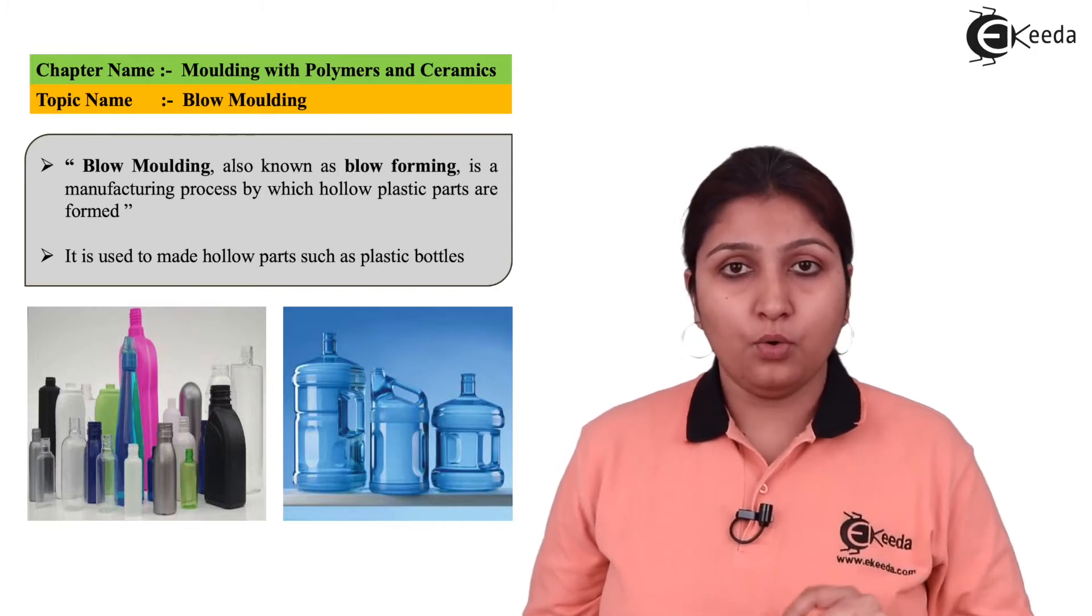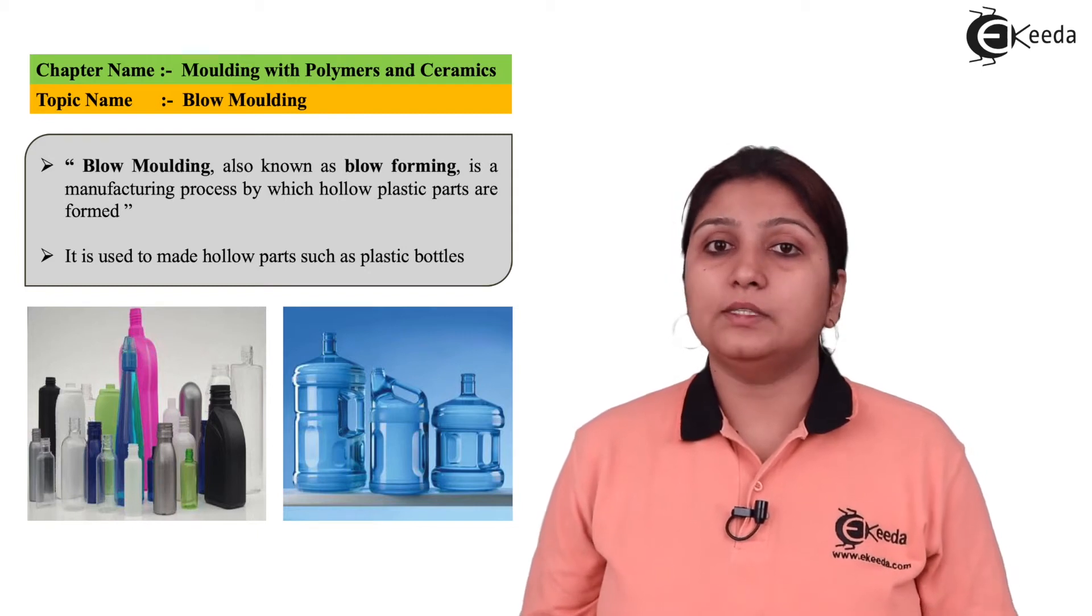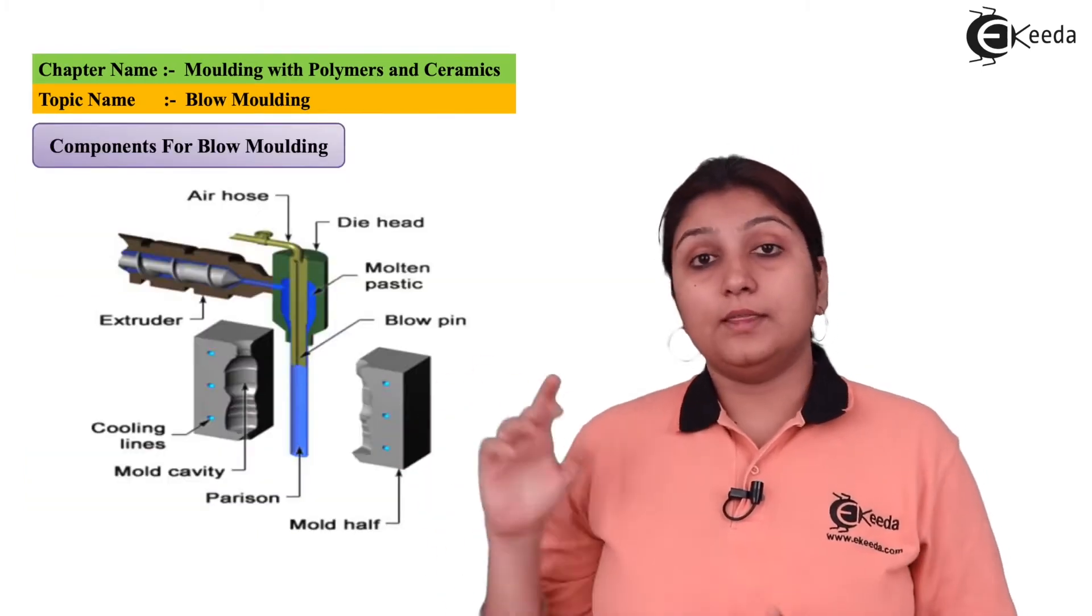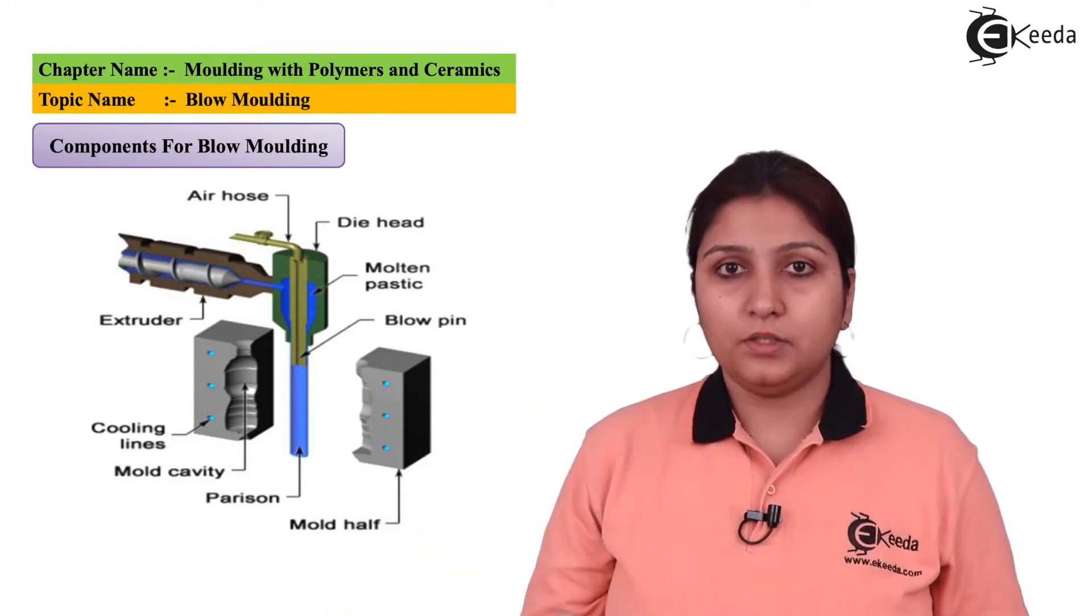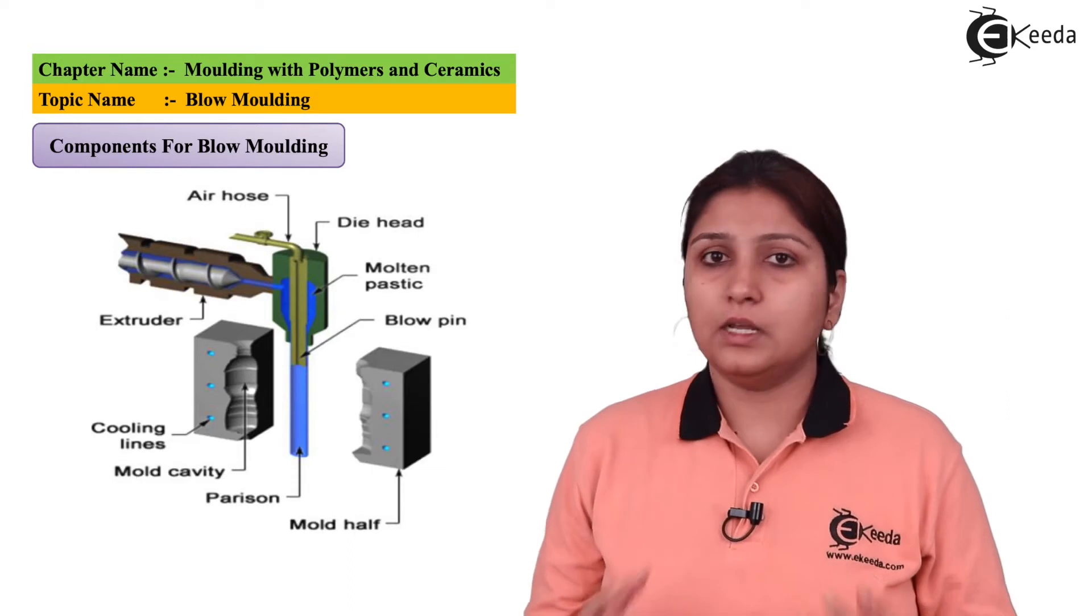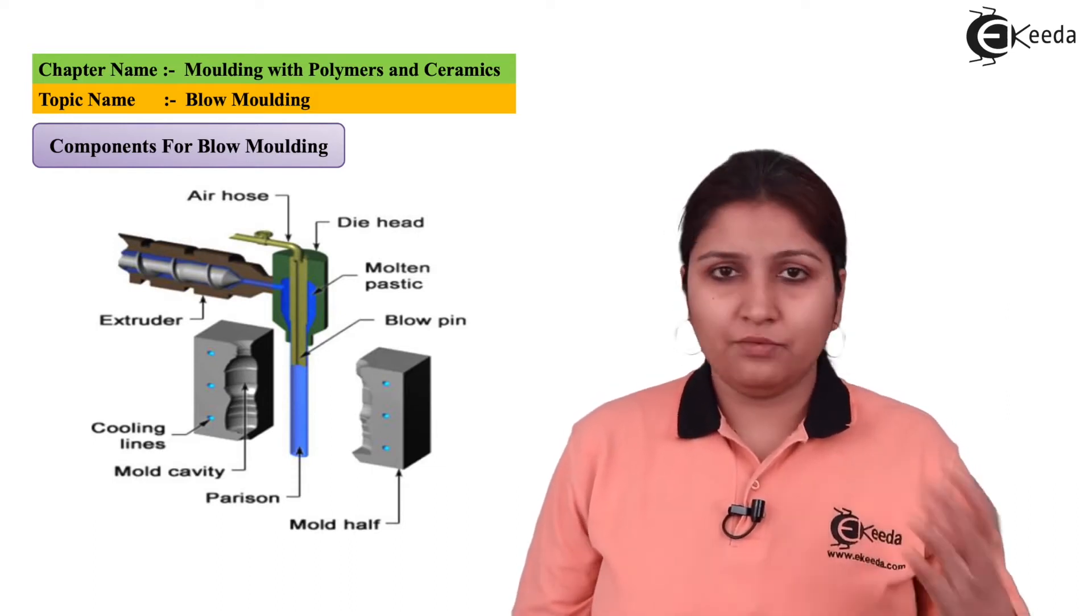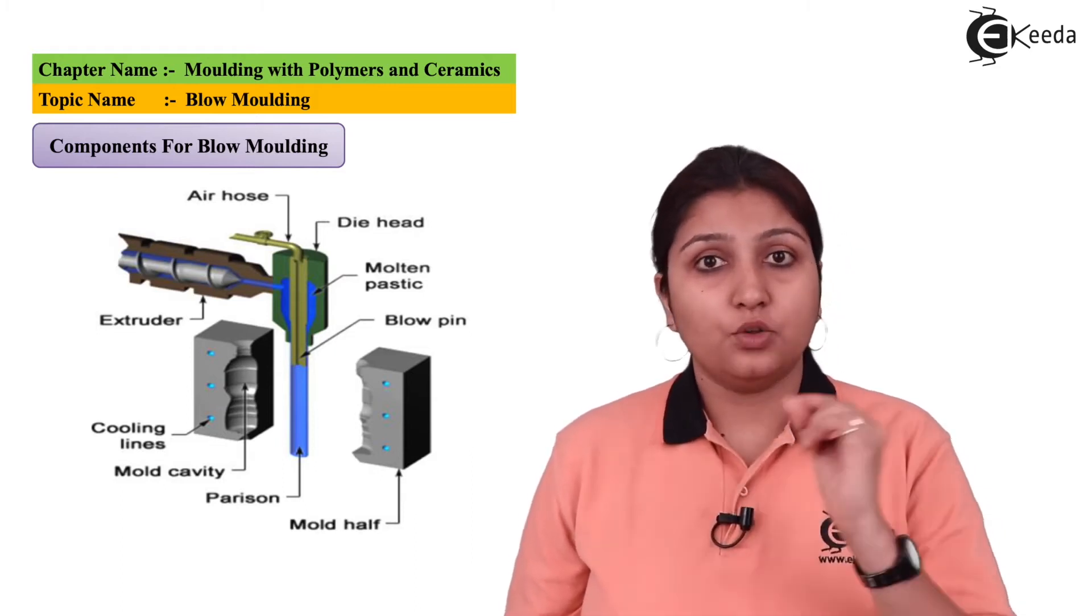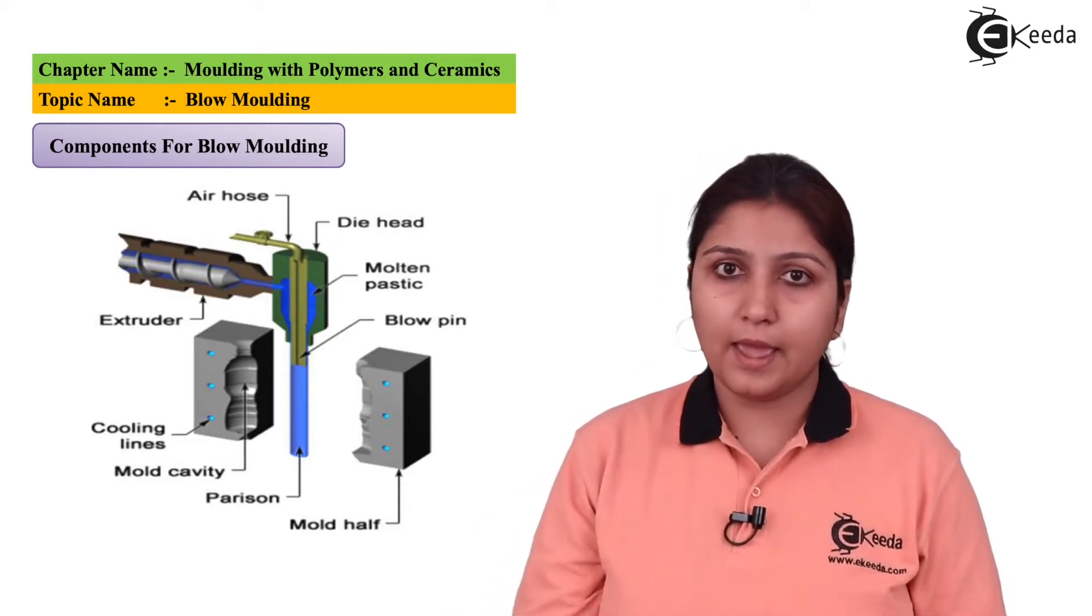Air is blown inside your plastic so that it inflates and forms the desired shape which is required. In this diagram you can see there is an extruder which supplies air to your parison. What is parison? It is nothing but a plastic object which is made through different heating and melting processes, but it is hollow from inside. So air is blown inside that parison like blowing a balloon.